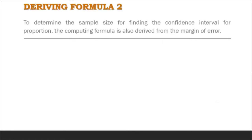Next, deriving Formula 2: to determine the sample size for finding the confidence interval for a proportion, the computing formula is also derived from the margin of error. Using the margin of error E equals z sub alpha over 2 times the square root of p-hat times q-hat all over n.